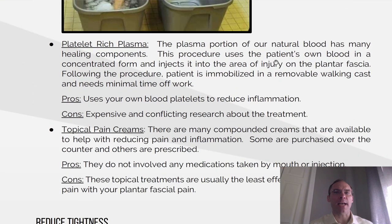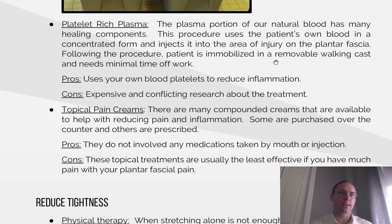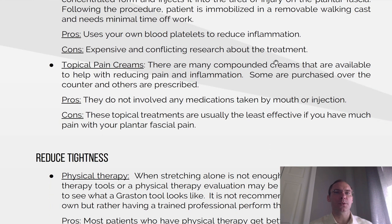Platelet-rich plasma. The plasma portion of our blood has many healing components, and this procedure uses a patient's own blood in a concentrated form and injects it into the area of injury on the fascia. Following the procedure, the patient is immobilized in a removable walking cast and needs minimal time off work. Pros: it uses your own blood platelets to reduce inflammation. Cons: it's expensive, and there's conflicting research about the treatment's effectiveness.